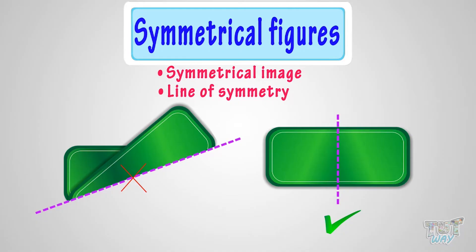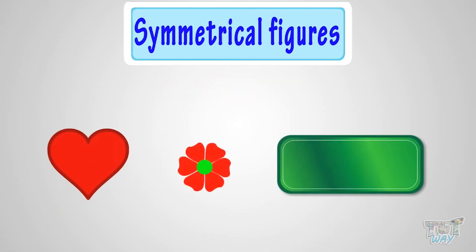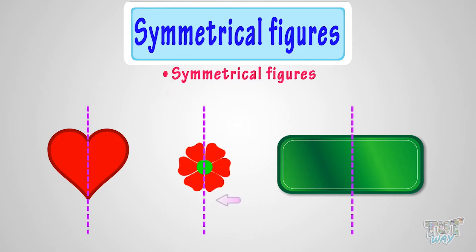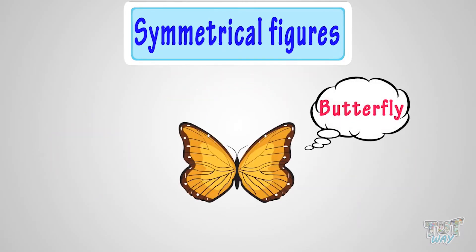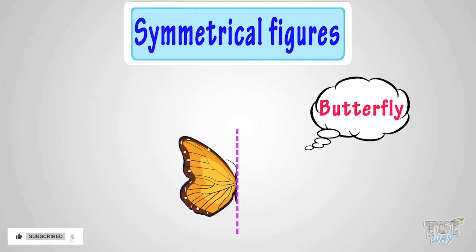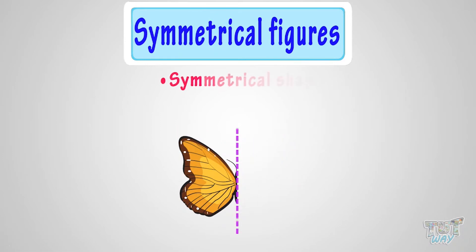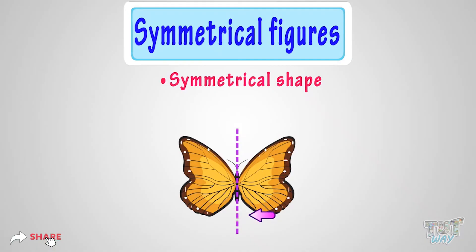Now kids, you have a fair idea of what symmetrical figures are and what is line of symmetry. Let's see a few examples of some symmetrical figures and their line of symmetry. Here we have a butterfly, and we can fold it exactly halfway. So it's a symmetrical figure, and the line of fold is the line of symmetry.